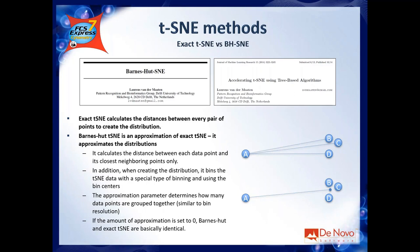The amount of approximation value defines how many events you group together when calculating the center of mass. At 0.5 you might group three events; increasing the approximation makes the group bigger, so you calculate one distance that approximates many objects. The default of 0.5 balances speed and accuracy well.